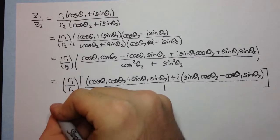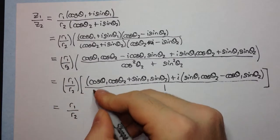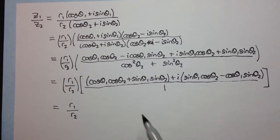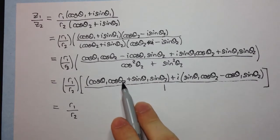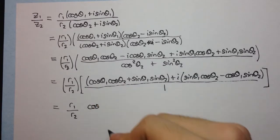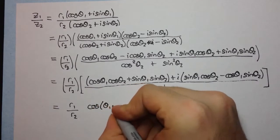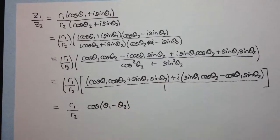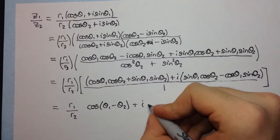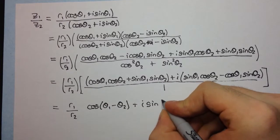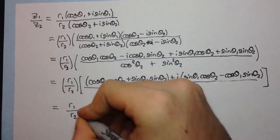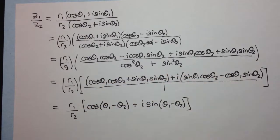And now we can recognize this here as, in a similar fashion to the products, this now becomes a difference. So this is cos theta1 minus theta2. Right? And here we have plus i times sin theta1 minus theta2 as well. Right?